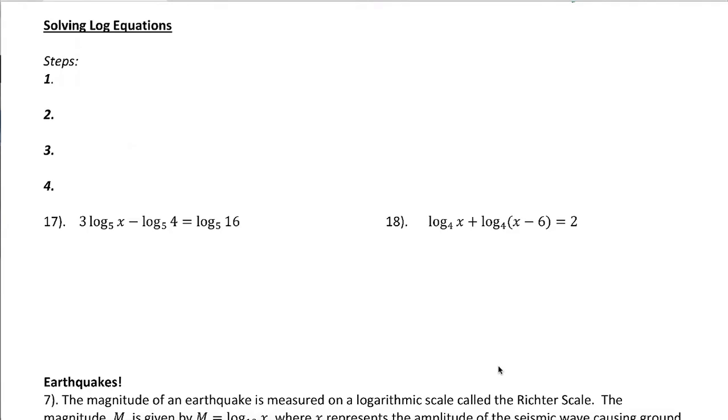We've already seen some basic log equations, and the thing we kept coming back to was if you've got a log and an x inside of that log, you're going to have to exponentiate both sides to get rid of the log, and that's still going to be our plan. But I can't do it yet, because exponentiating both sides right now wouldn't help, because if I try and exponentiate that whole side, I don't have any way to simplify 5 to the 3log₅(x) - log₅(4). There's too much going on there.